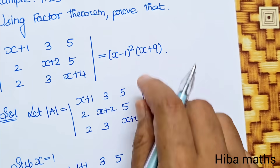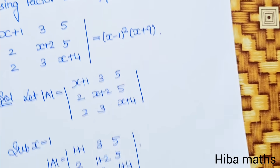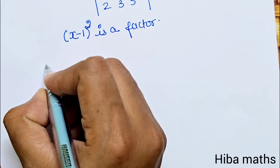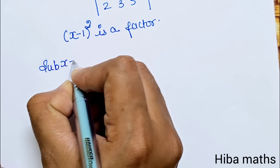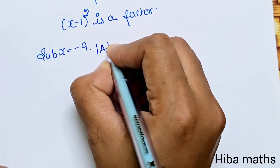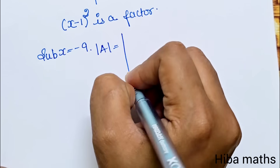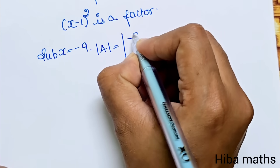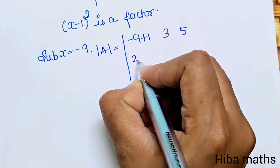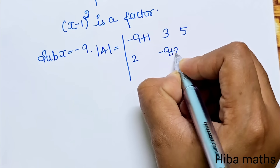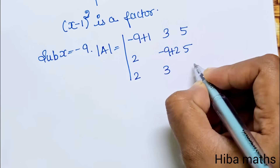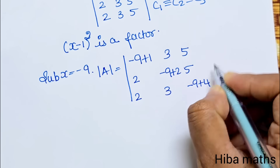Now, to find the next factor, substitute x equal to -9. So the determinant becomes rows (-9+1, 3, 5), (2, -9+2, 5), (2, 3, -9+4), which gives rows (-8, 3, 5), (2, -7, 5), (2, 3, -5).